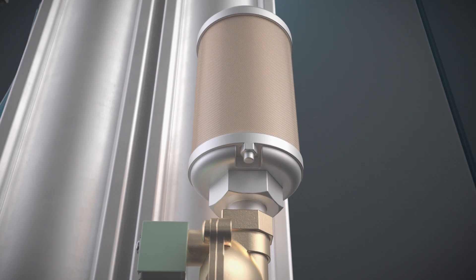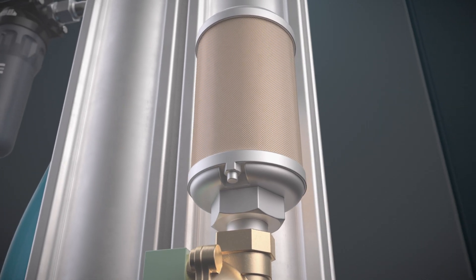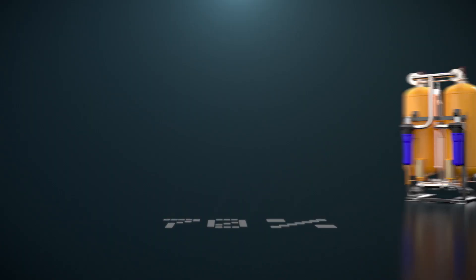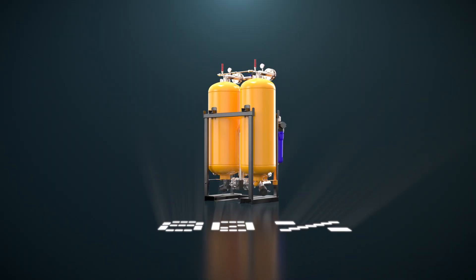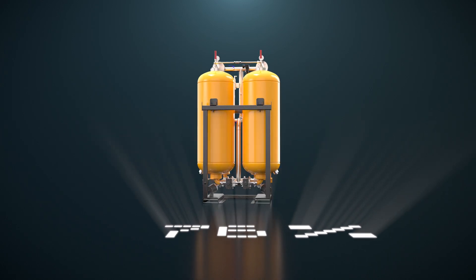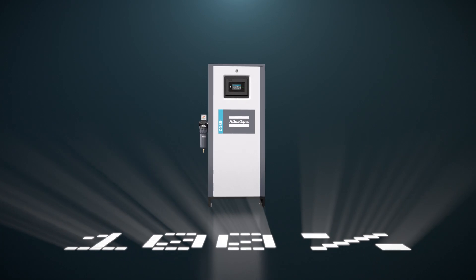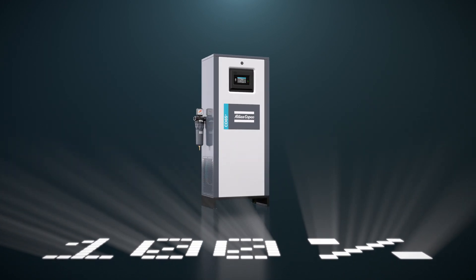In addition, it increases purge efficiency, allowing for a purge air consumption of just 16% and lower energy use. Whereas most dryers are only built to work at 70% to 80%, the CD Plus is designed to operate continuously with 100% airflow without compromising on performance.